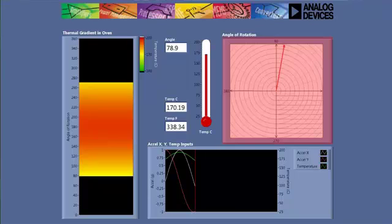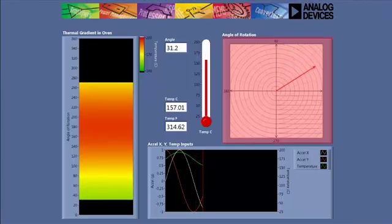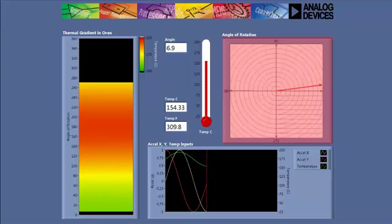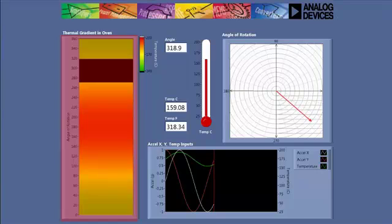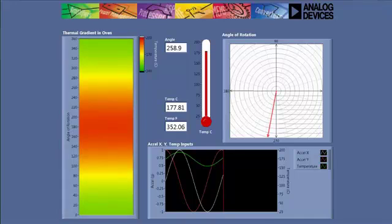In the plot on the top right here, we're plotting the tilt angle from the accelerometer. And we can see it sweep the circle as the board is continuously rotating. Finally, we have our thermal gradient plot from the oven. And we can see from this that we're measuring about a 40 degree C differential from the back to the front of the oven.